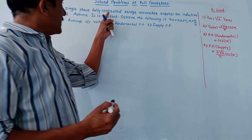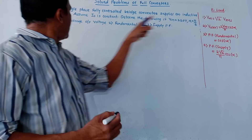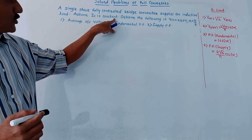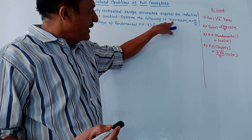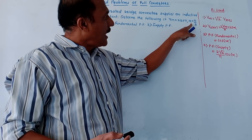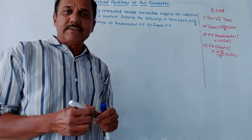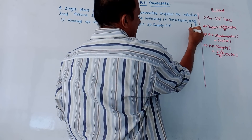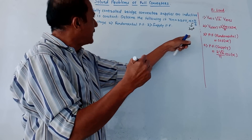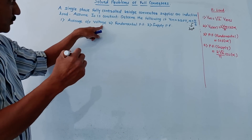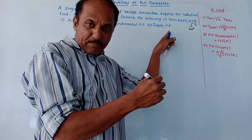Next problem: a single-phase fully controlled bridge converter supplies an inductive load. Assume I0 is constant, that is output current is constant. Determine the following, given input voltage is 230 volt and alpha is π/6. Remember, this value of alpha is in radians, so π/6 equals 30 degrees. Calculate: first, average output voltage; second, fundamental power factor; third, supply power factor.